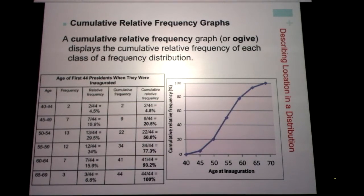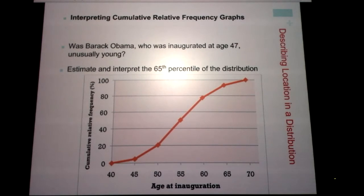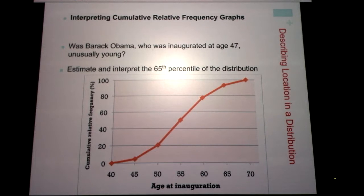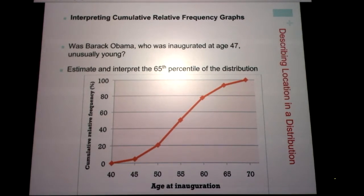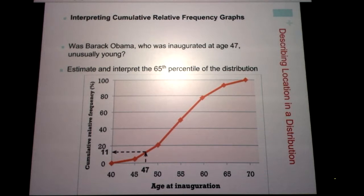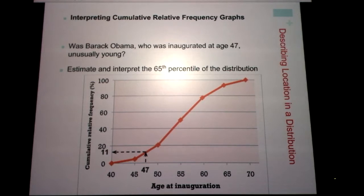You might see 'ogive' in your book. Here's an example using the same data: Barack Obama was inaugurated at age 47 — unusually young. 'Unusually young' is a subjective term, so we need evidence. We look at age 47 on the graph, find the corresponding y-value: about 11. So Barack Obama was in the 11th percentile for age of inauguration — a very young president, since only 11% of presidents were younger than him.